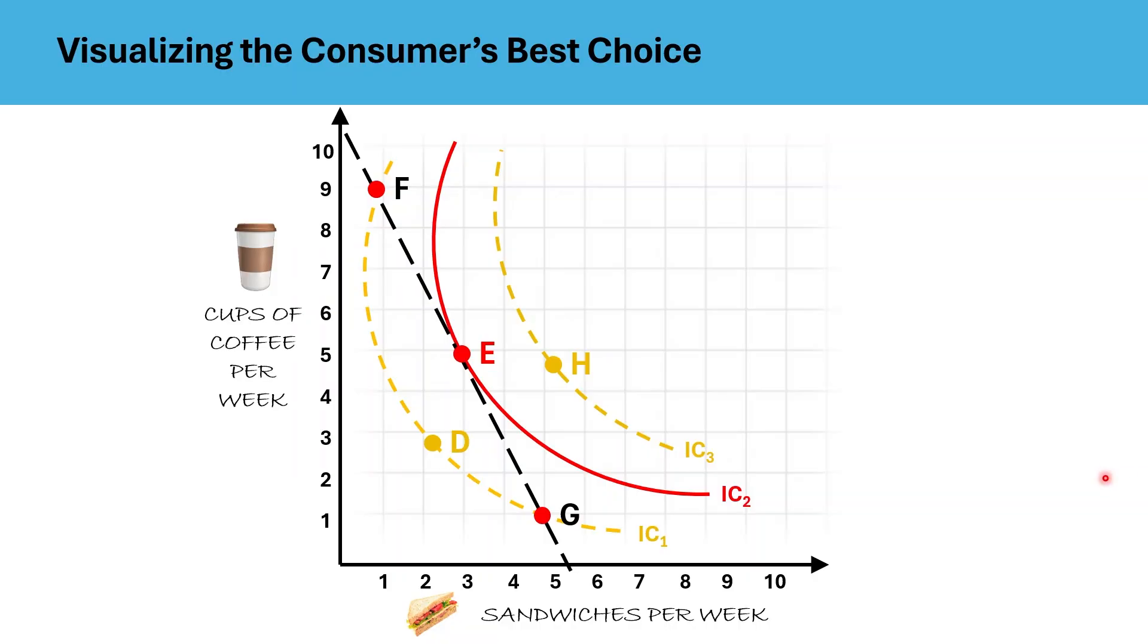To understand how the consumer makes the smartest choice, let's walk through this graph. The consumer cannot purchase any combination that lies to the right of the budget line like point H because it is unaffordable given the current income and prices of the two goods.